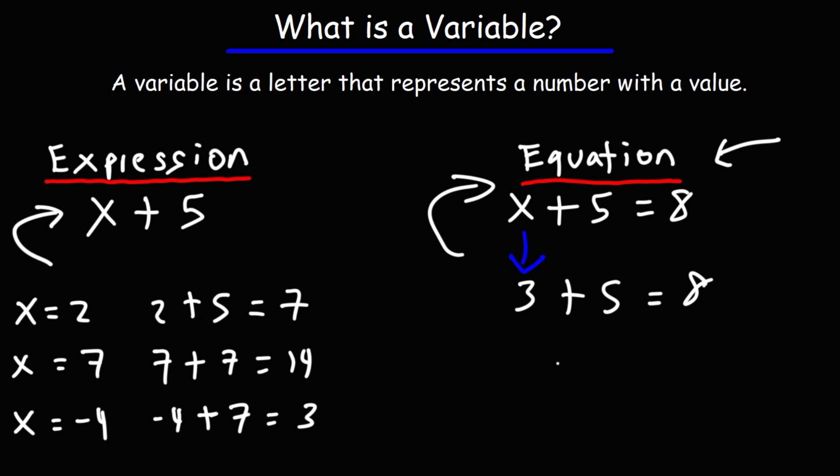For quadratic equations, x can have two values in most cases. So for equations, x will have specific values, whereas for an expression, x or a variable can have multiple values.